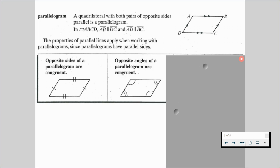We're also going to know that opposite angles of a parallelogram are congruent. So going back to that diagram, angle A and angle C would be congruent. Angle B and angle D would be congruent.